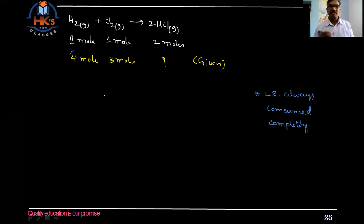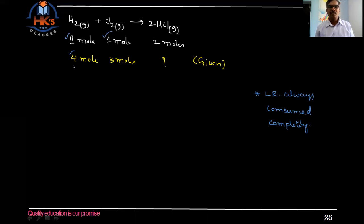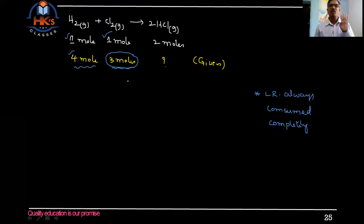In these two reactants, as per the data, let us find out which is limiting and which is excess. They have given four moles of hydrogen and three moles of chlorine. Assume four moles of hydrogen is completely consumed. Since every one mole of hydrogen requires one mole of chlorine, if four moles of hydrogen is completely consumed, we definitely need four moles of chlorine. But they have given only three moles of chlorine, not four moles. That means they did not give a sufficient amount of chlorine to react completely with four moles of hydrogen.